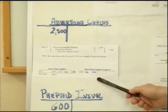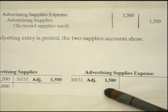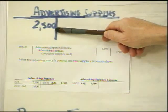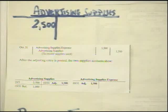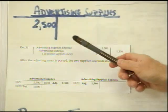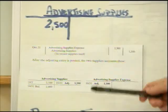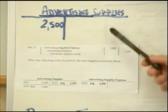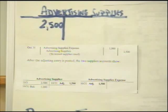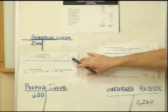Here's the T-account for advertising supplies — we have $1,500 credited out of it. This account acts as a holding tank: it amasses all the supplies we purchased that went into that closet in the back, and at the end we count what's left. Whatever remains we haven't used, and the difference is what we used, which we record as an expense. That's one of the adjusting entries we'll have on a continuous basis in accounting.